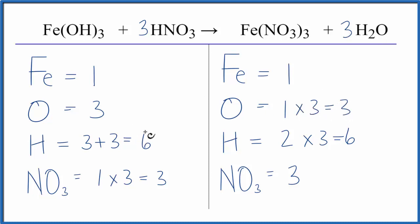Everything's the same on both sides of the equation. So this is the balanced equation for iron three hydroxide plus nitric acid. And this is Dr. B. Thanks for watching.